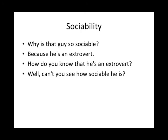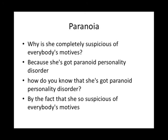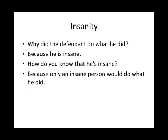Paranoia is another one: why is she completely suspicious of everybody's motives? Because she has paranoid personality disorder. How do you know she has paranoid personality disorder? By the fact that she's so suspicious of everybody's motives. Why did the defendant do what he did? Because he's insane. How do you know he's insane? Because only an insane person would do that. These are circular concepts that lend more complexity than needed. I would suggest we try to avoid intervening variables and hypothetical constructs at all costs.